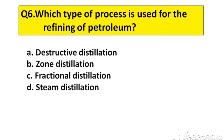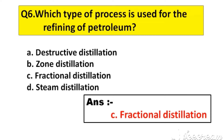Question number 6. Which type of process is used for the refining of petroleum? Option A: Destructive distillation, B: Zone distillation, C: Fractional distillation, D: Steam distillation. The right answer is option C: Fractional distillation.